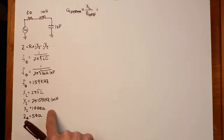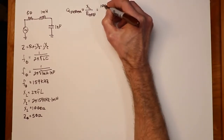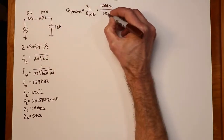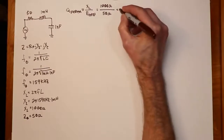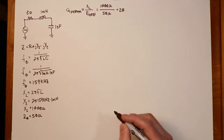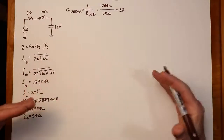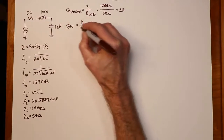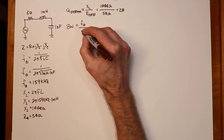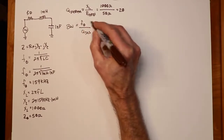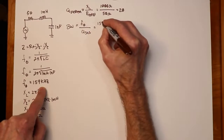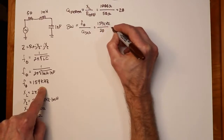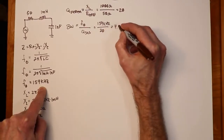X_L is 1000 ohms and our total resistance is 50 ohms, so we divide those to get a system Q of 20 — the quality factor is 20. We can now relate that back to bandwidth and center frequency. Bandwidth equals the resonant frequency divided by the system Q: 159 kHz divided by 20, which works out to 7.95 kilohertz.